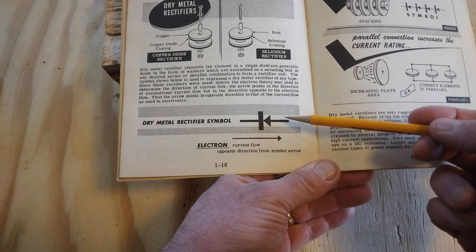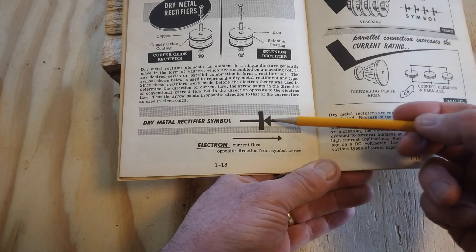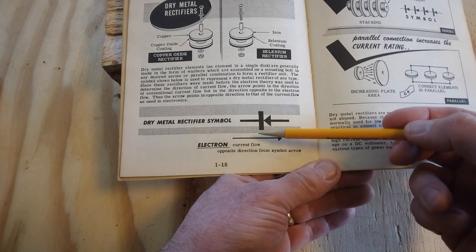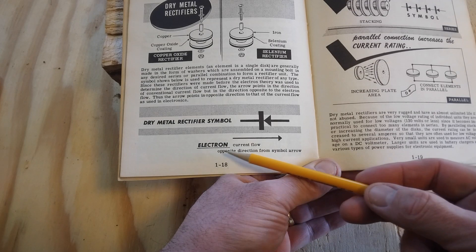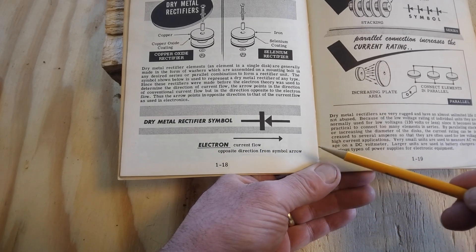And they kind of flipped the diode symbol around. So now you've got a pointy arrow here to a plate. And in the conventional flow, it's going to go this way, from positive to negative. So it now has to be explained that the electron current flow is in the opposite direction of the symbol arrow.